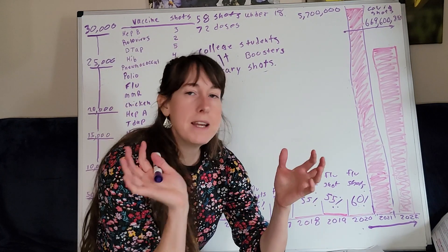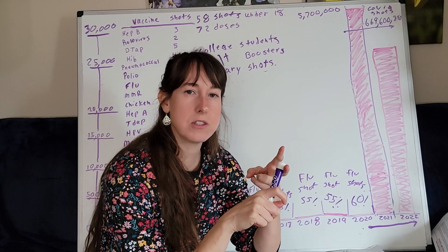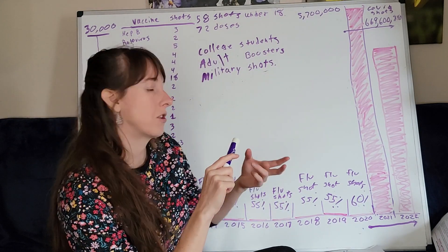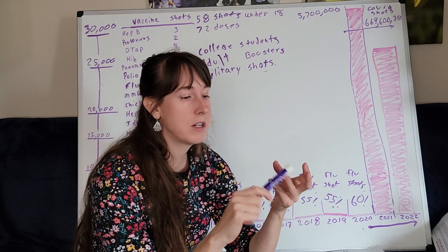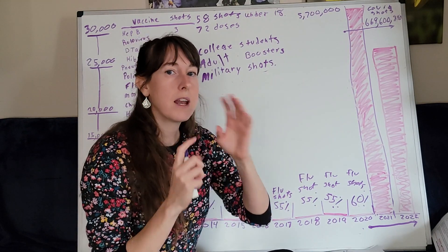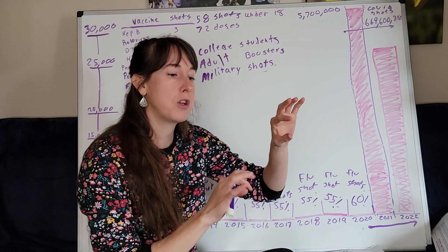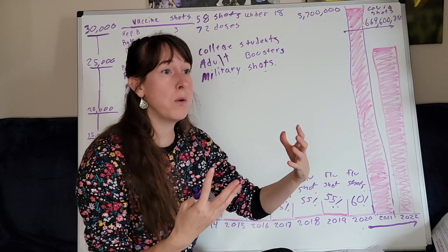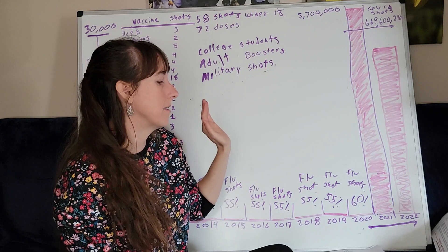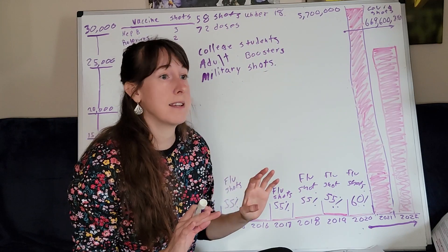It would be nice to know how many people in the United States are getting an MMR or DTaP shot, because then we could look at how many reports of seizures, heart attacks, transverse myelitis, Guillain-Barré syndrome, Bell's palsy, and so forth appear in VAERS — and see the rate of reported injuries to the rate of total vaccines given. If anyone out there has that data, send it to me. All I can say is that we're giving out vaccines like Tic Tacs, every year.